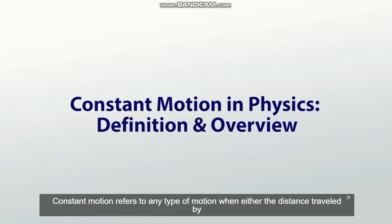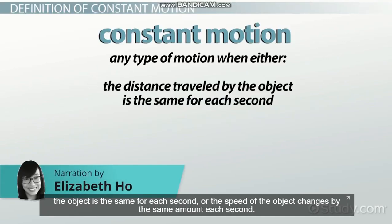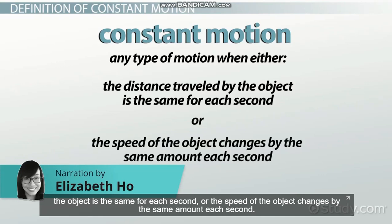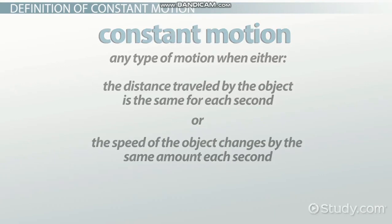Constant motion refers to any type of motion when either the distance traveled by the object is the same for each second, or the speed of the object changes by the same amount each second.